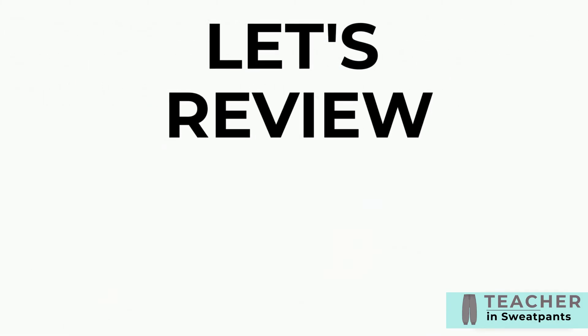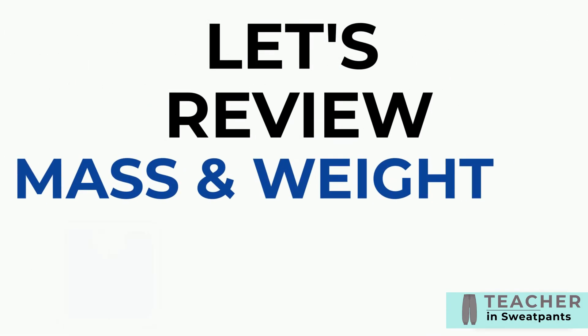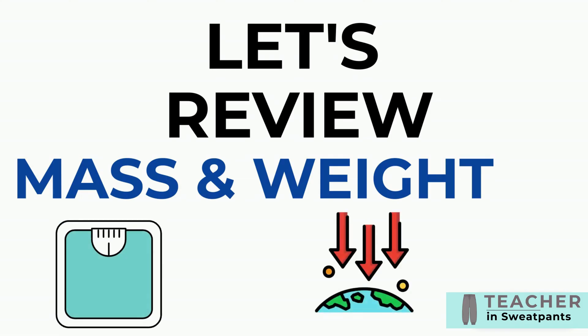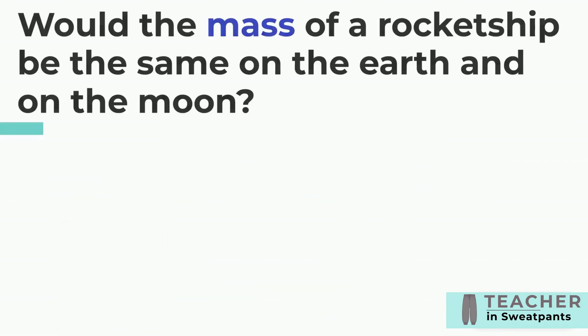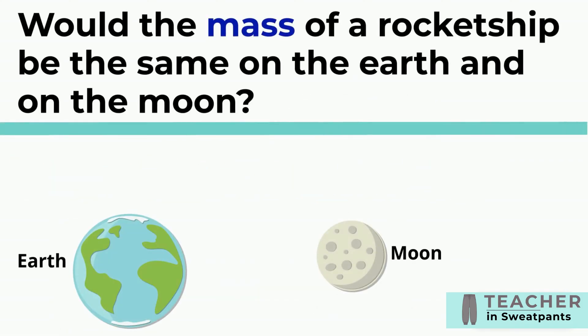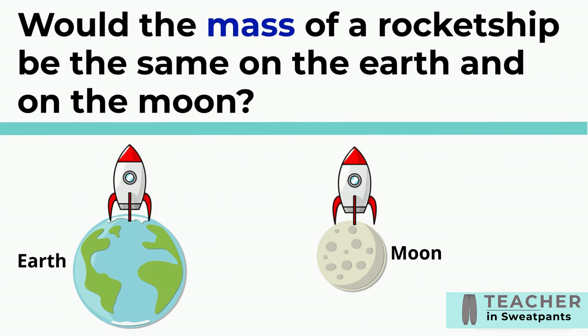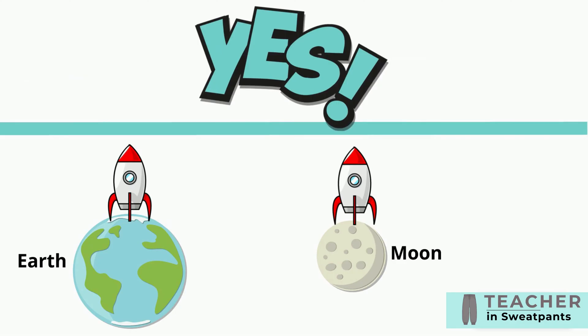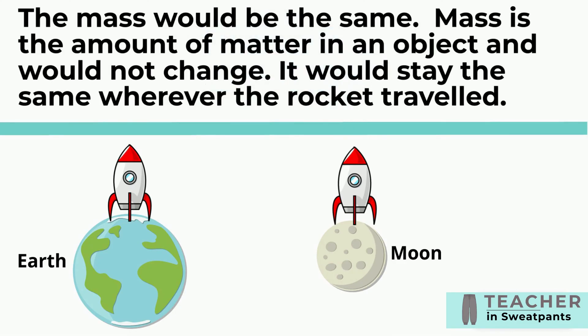Let's review mass and weight. Would the mass of a rocket ship be the same on the Earth and on the Moon? Yes — the mass would be the same. Mass is the amount of matter in an object and would not change; it would stay the same wherever the rocket traveled.